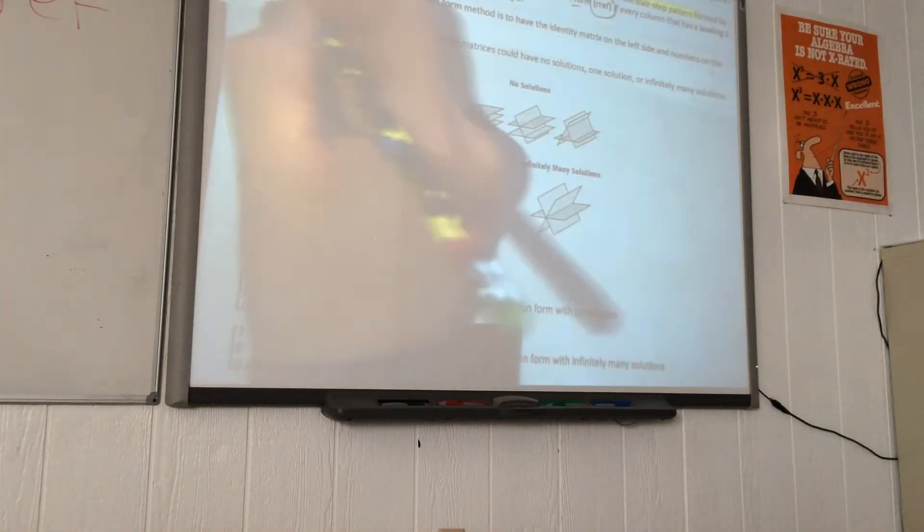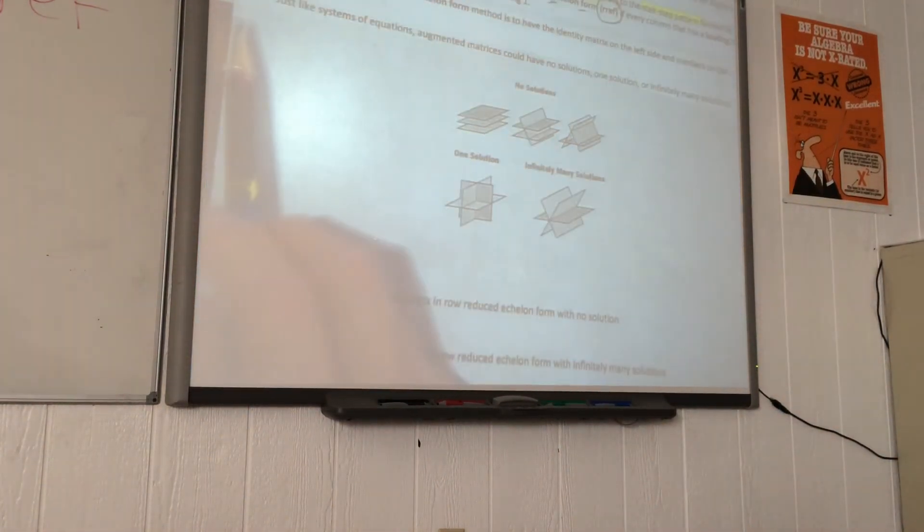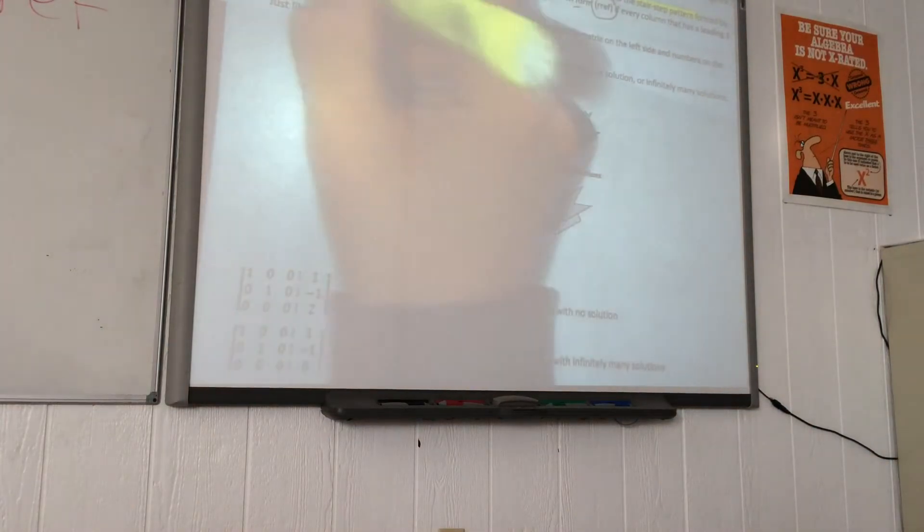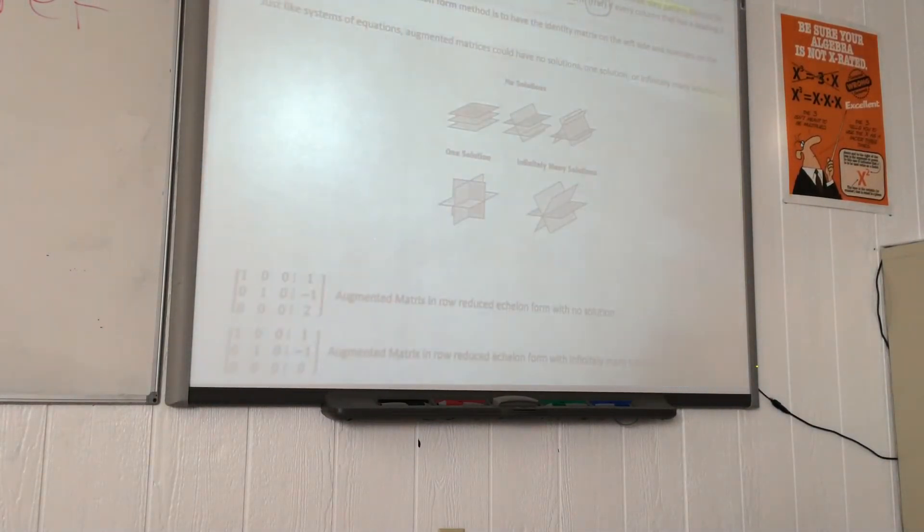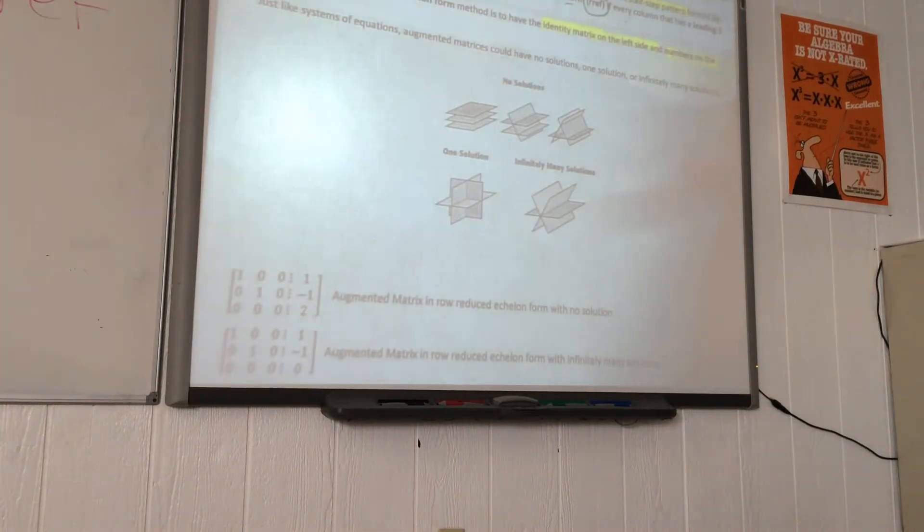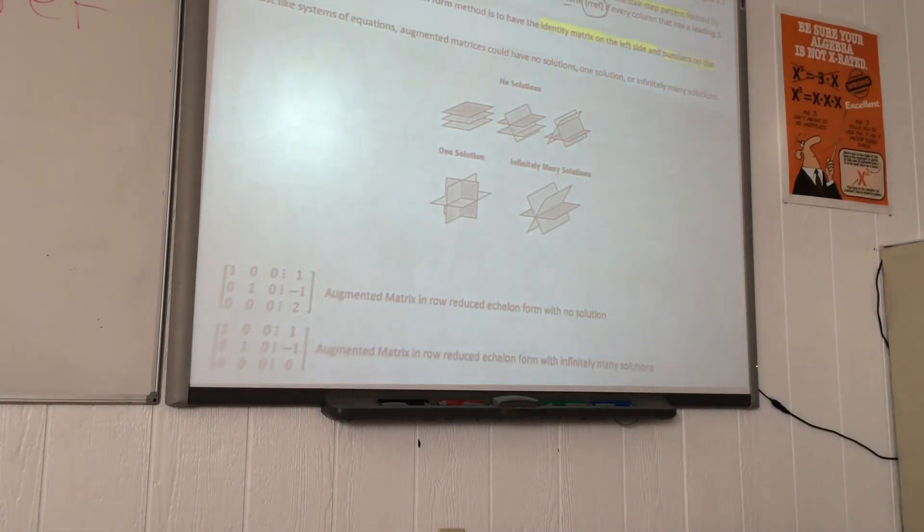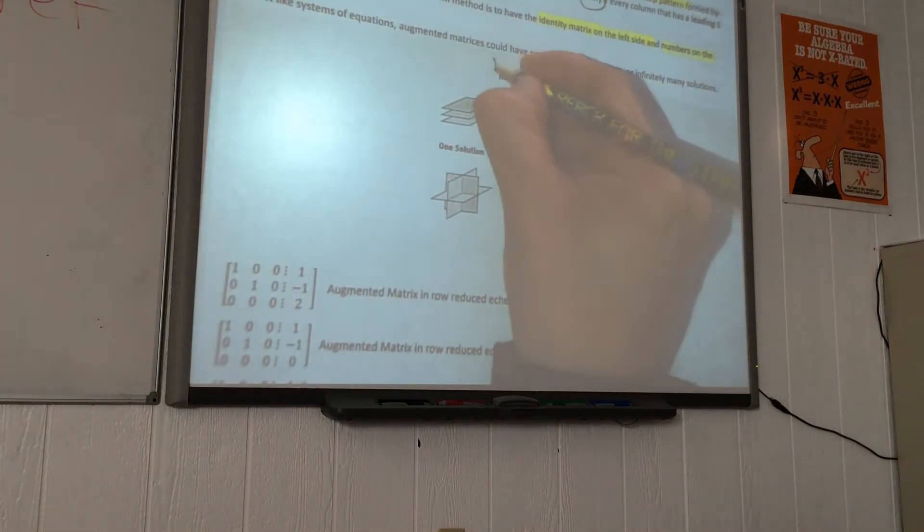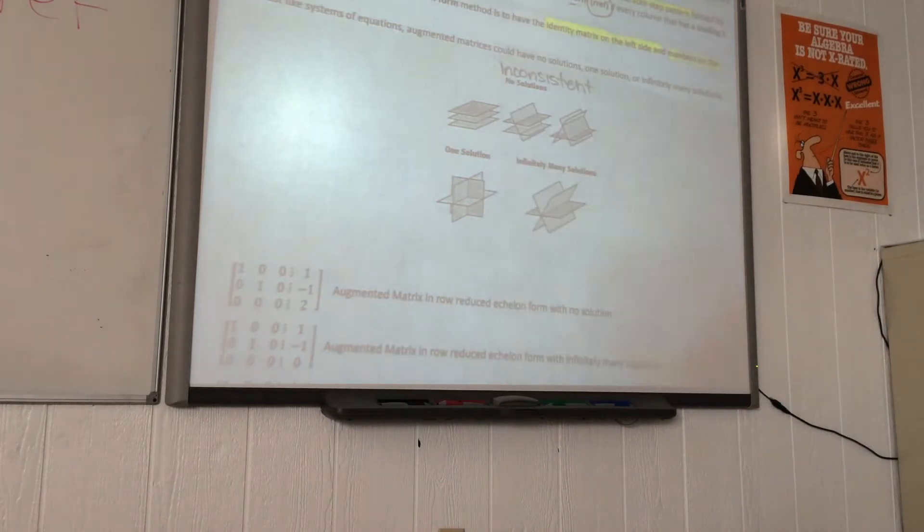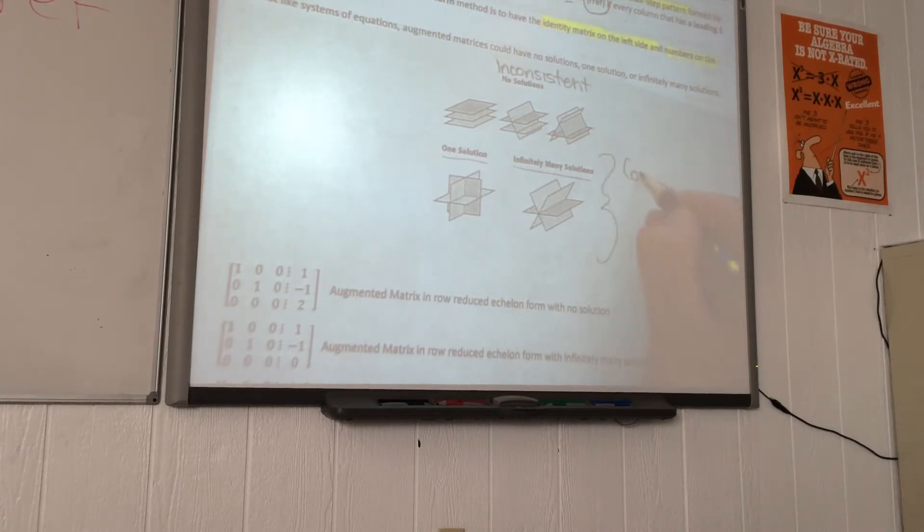Please underline or highlight whatever I'm highlighting or underlining. Identity on the left and numbers on the right. Let me show you three examples. When we talk about a system with no solutions, those are inconsistent. When we talk about systems that have one solution or infinitely many solutions, those systems are called consistent.